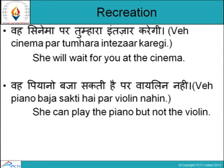'Vahe piano baja sakti hai par violin nahi.' She can play the piano but not the violin. Baja sakti hai means she can play. Piano is a key instrument, violin is a string instrument. Par means but — so she has the ability to play piano but not violin.